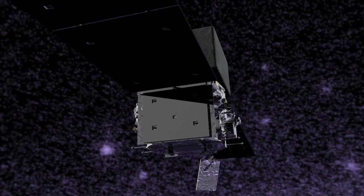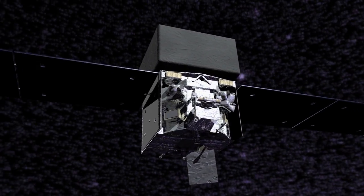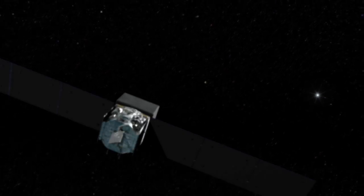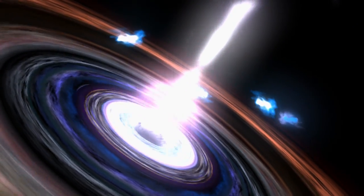The other instrument is called the Gamma-ray Burst Monitor, or GBM. It looks for spectacular flashes of gamma rays from, among other things, the birth of black holes far across the universe.